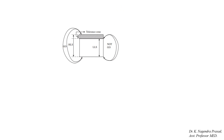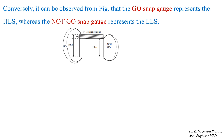Similarly, the schematic representation shows the go gauge and not go gauge for a shaft. The gauges for shafts are called snap gauges. The go snap gauge corresponds to the higher limit of the shaft, whereas the not go snap gauge corresponds to the lower limit of the shaft. This is Taylor's principle.